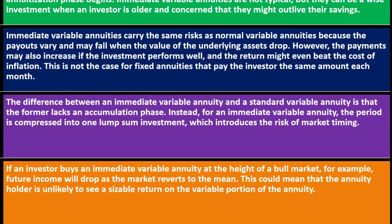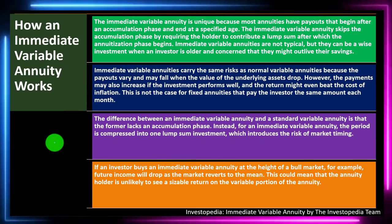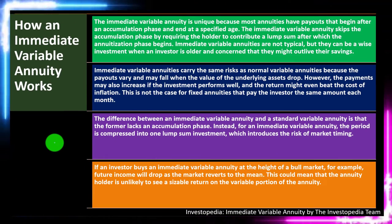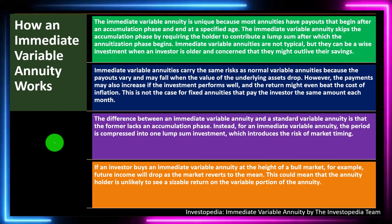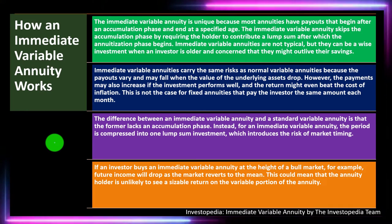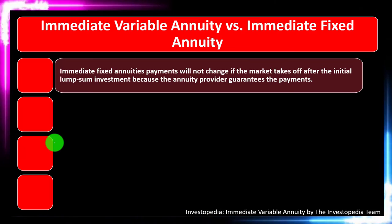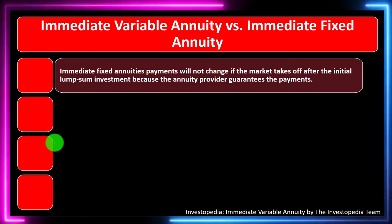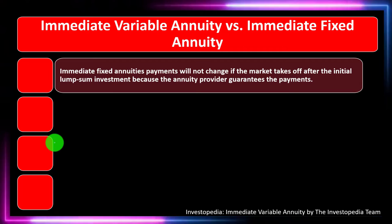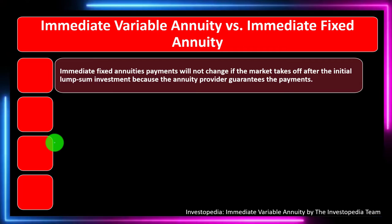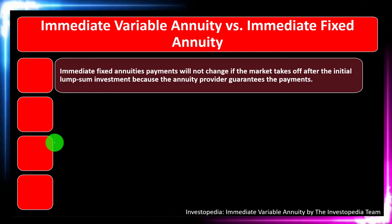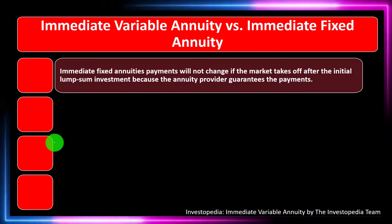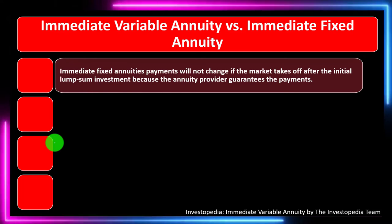This could mean the annuity holder is unlikely to see a sizable return on the variable portion of the annuity. No one knows if it's truly a bull market from a long-term perspective, and no one knows exactly the tips, peaks, and valleys of the market overall, whether day-to-day or from a short-term perspective.